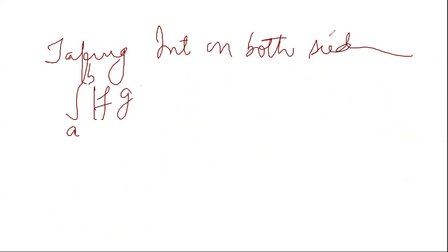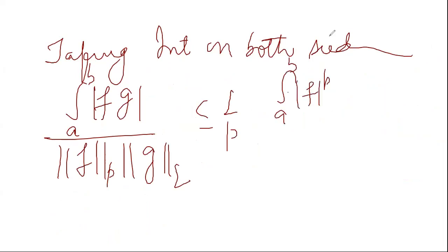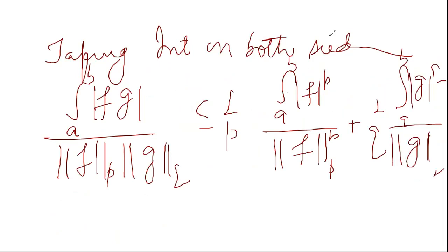Taking integration on both sides, we get integration here - integration will be where mod is, not on the norm, because norm is a scalar. This is less than or equal to 1 by p, integration A to B mod of Fp upon norm of Fp, plus 1 by q, integration A to B mod of Gq upon norm of Gq.